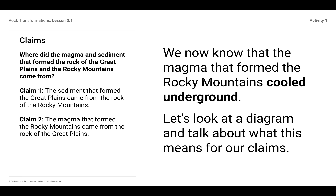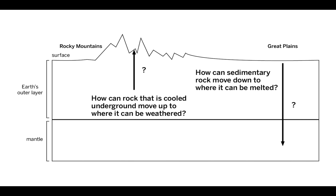So what information do we need to know? We've got one more chapter, and we need to figure out basically how did this magma that cooled underground get to the surface? We need to know how can rock that is cooled underground move up to where it can be weathered, or how can sedimentary rock move down to where it can be melted? Our chapter three question is: how could rock from one of the regions have transformed into a different type of rock in the other region?